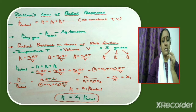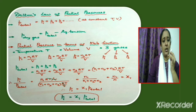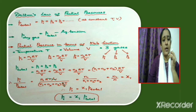Usually gases are collected over water, so how can we get the pressure of the dry gas? The pressure of the dry gas is equal to P_total minus aqueous tension, which is the pressure exerted by the saturated water vapor. We need to subtract this aqueous tension from the total pressure to get the pressure of the dry gas: P_dry = P_total − aqueous tension.